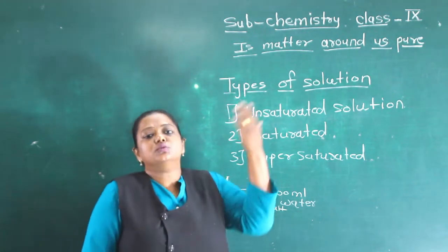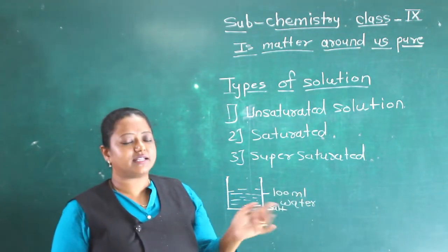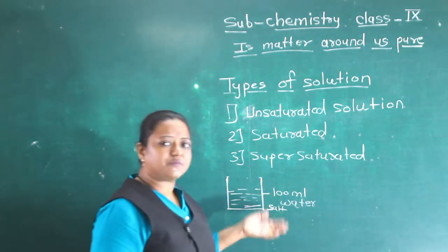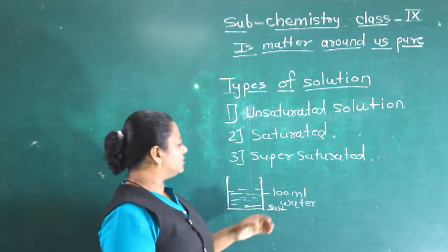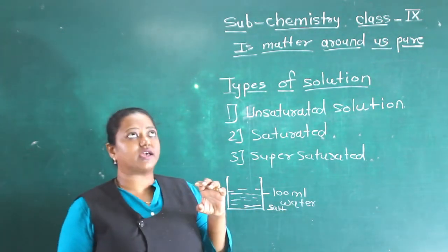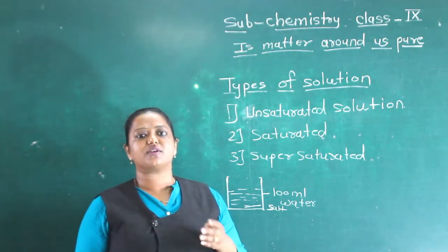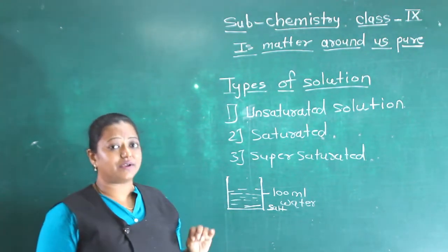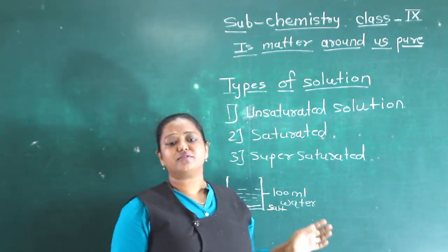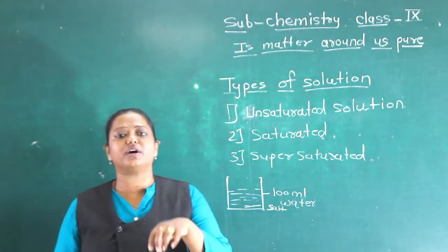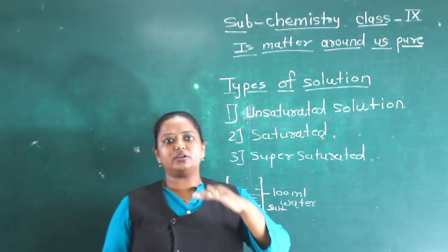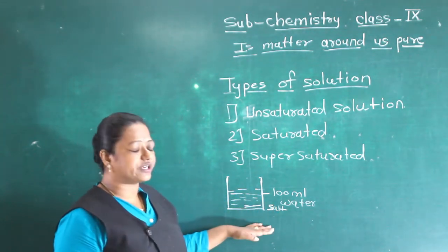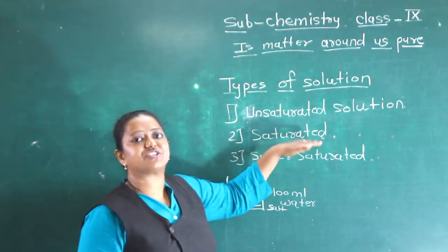Now if I try to add two more spoons of salt, it will still get dissolved into the water. But now I will take another beaker and add six teaspoons or six full spoons of salt into this solution. What will happen? Now it is not easy for the salt to dissolve completely into the water. Some particles of the salt will be visible now. Why? Because now this unsaturated solution has turned into a saturated solution.